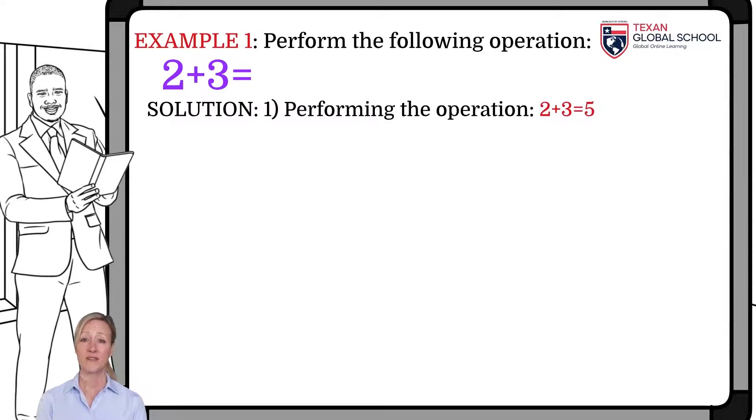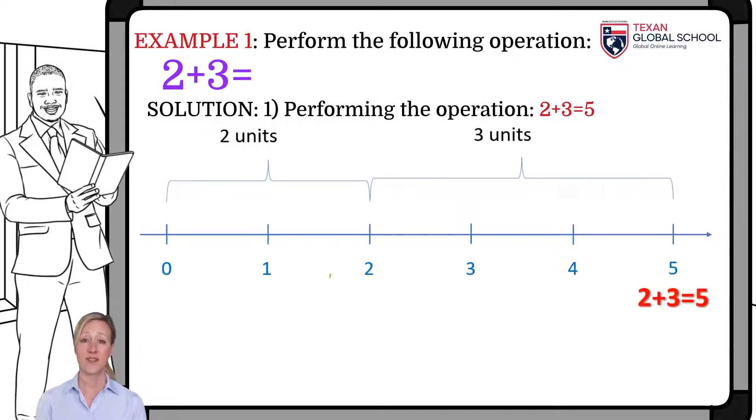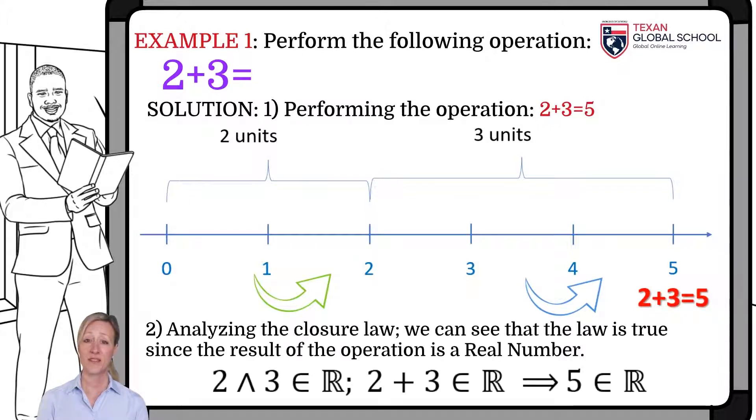Perform the operation 2 plus 3. First, we draw the number line. We indicate two units and then the next three units, thus obtaining five units. So, 2 plus 3 equals 5. Analyzing the closure law, we can see that 2 and 3 are real numbers, and the result 5 of the sum is also a real number.